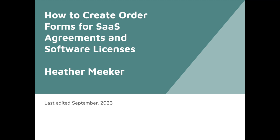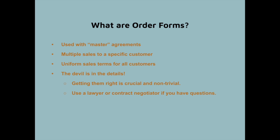This presentation is not about the terms and conditions that are normally in software and SaaS agreements — you can look at some of my other presentations for more information about that. Order forms are documents used with master agreements, like master license or master service agreements. They allow you to make multiple sales to the same customer under a single agreement and to use a master set of terms for all of your customers, making the processing of your orders more easy and consistent.